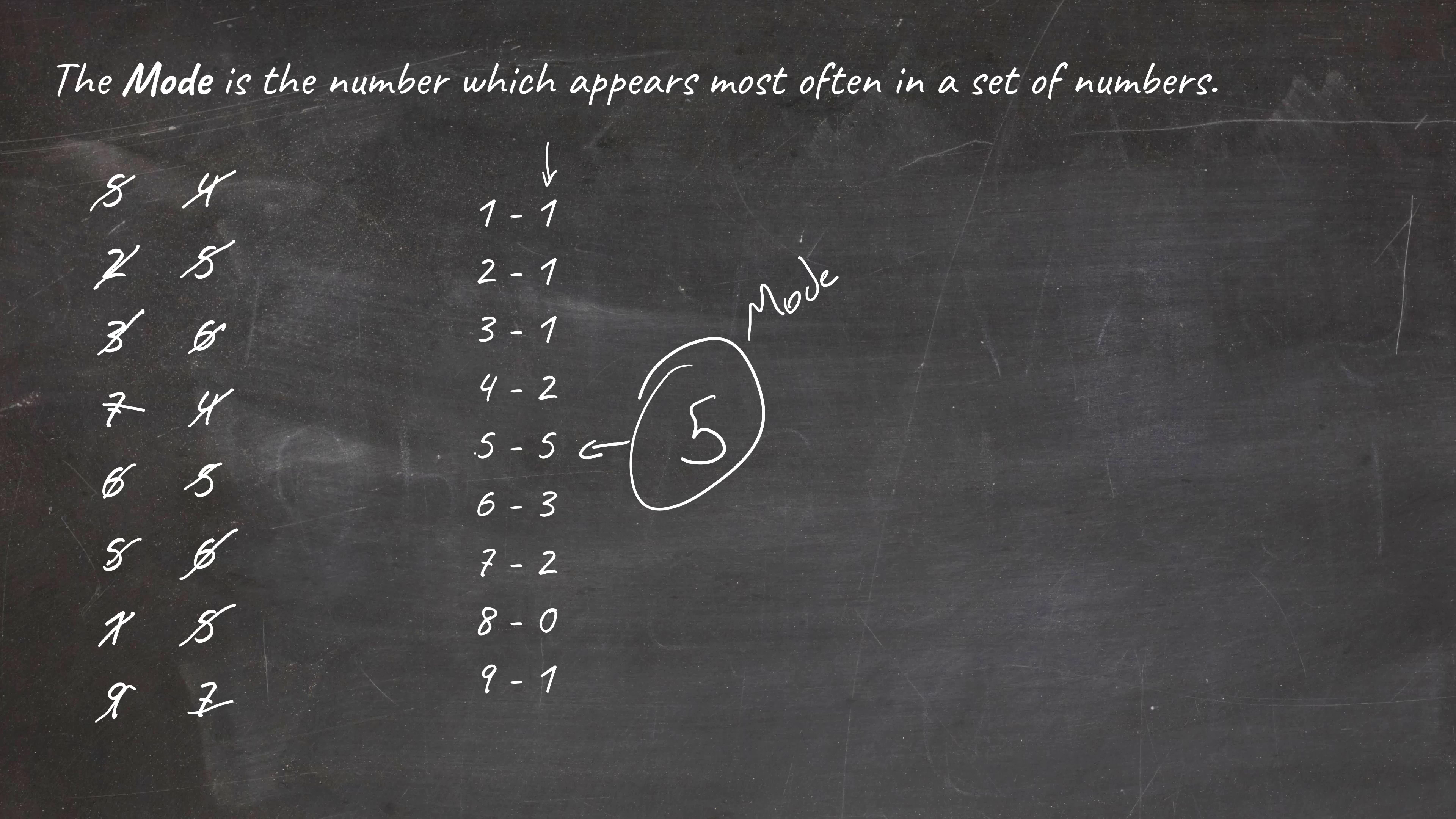And so the mode can be really difficult in that way. But it does tell us what is the most common thing in that data set. What is the most common circumstance in the observations that we have, which can be very useful sometimes.